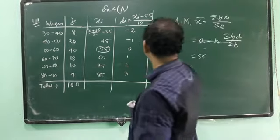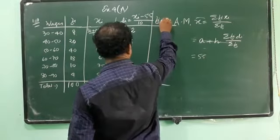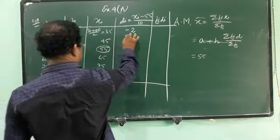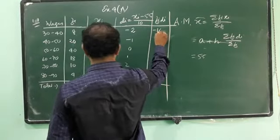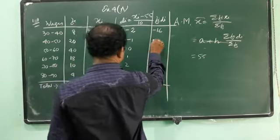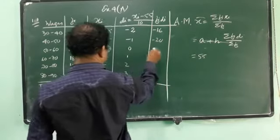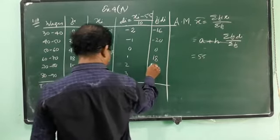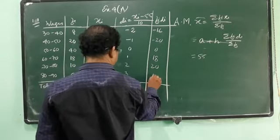Now we need fi into di which makes our calculation easier. So fi into di, 8 into minus 2 is minus 16, 20 into minus 1 is minus 20, 40 into 0 is 0, 18 into 1 is 18, 10 into 2 is 20, and 4 into 3 is 12.